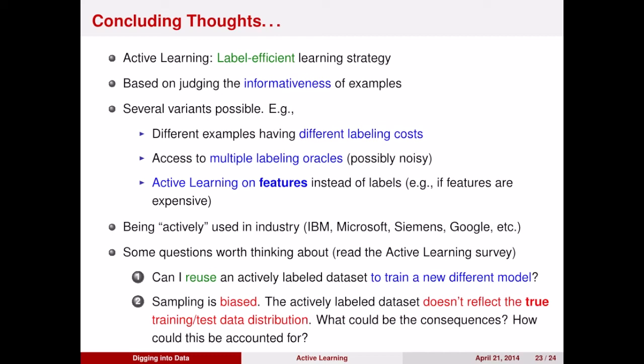To wrap up, we've talked about active learning, which is a label-efficient learning strategy. When your annotators are very expensive, or you don't have a lot of time to build a model, this is a great way to get a lot of data quickly that will give you a good model.